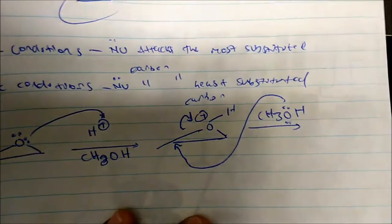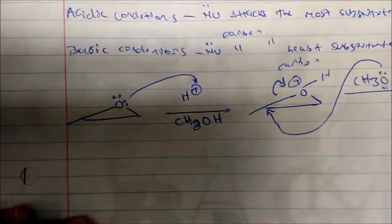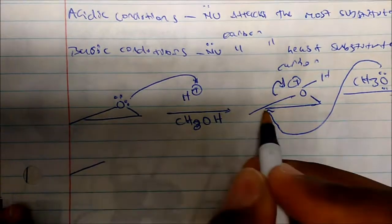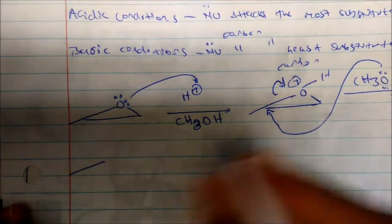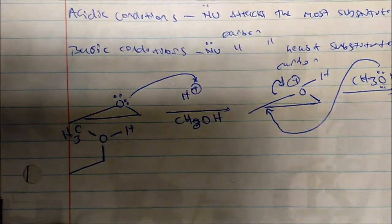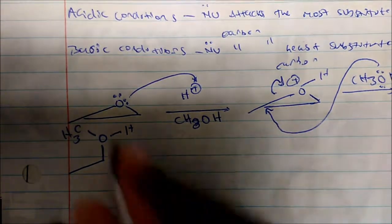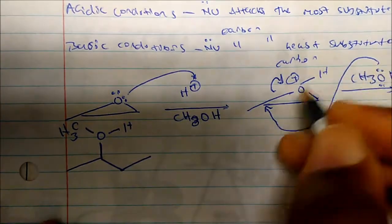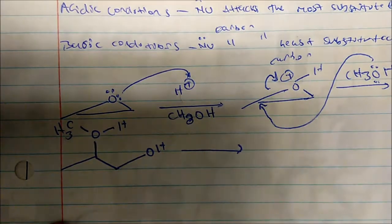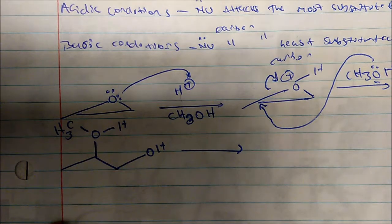Once the nucleophile attacks the more substituted carbon, the bond breaks and electrons go onto the oxygen. Out of the two carbons, one had two hydrogens and one had one hydrogen — so that one with fewer hydrogens is the more substituted carbon. On that second carbon we now have an oxygen bonded to a hydrogen, a carbon, and a methyl group, and we continue the carbon chain. The alcohol has been created.